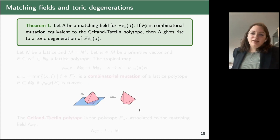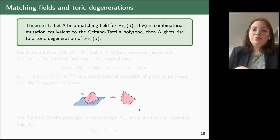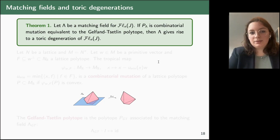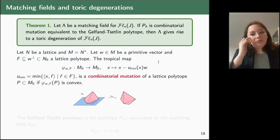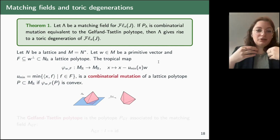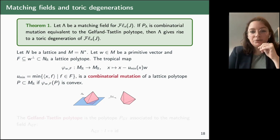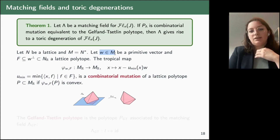The first main theorem: if we have a matching field λ for a partial flag variety, and the matching field polytope P_λ is combinatorial mutation equivalent to the Gelfand-Zetlin polytope, then λ gives rise to a toric degeneration of the partial flag variety. To explain this theorem, we first need to introduce combinatorial mutations. Combinatorial mutations were introduced in the study of Fano varieties to classify them.